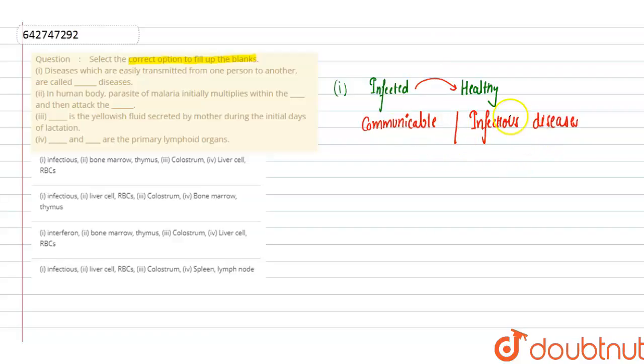Second blank: in human body, parasite of malaria initially multiplies within blank and then attacks the blank. If we see the second blank, in human body malaria parasite is a plasmodium parasite.